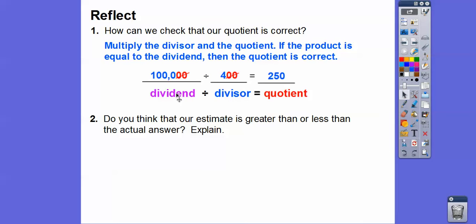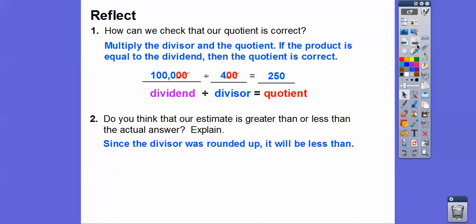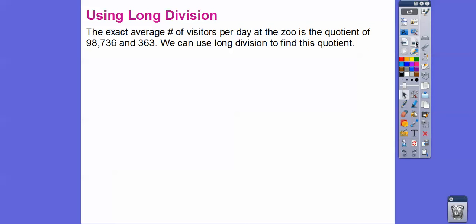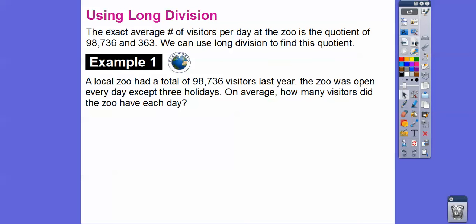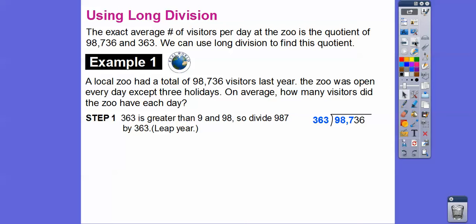Is our estimate greater than or less than the actual number? Since the divisor was rounded up to 400, the actual quotient will probably be a little bit more than 250 — maybe around 270. Now let's find the exact average: the exact number of visitors per day is the quotient of 98,736 divided by 363. We'll use long division.